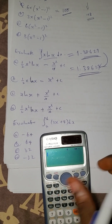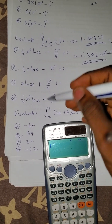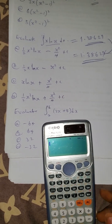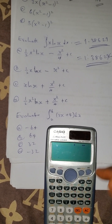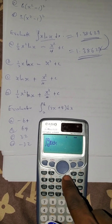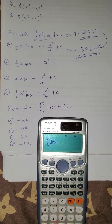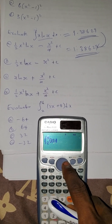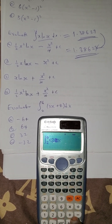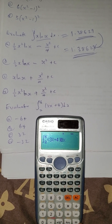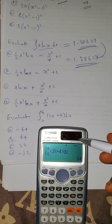This next question is definite integration — you are given limits. Reset the calculator, press the integration sign, set the upper limit to 6, the lower limit to 2, and inside enter (3x + 4), close bracket, then press equals. The answer is straightforwardly 64.